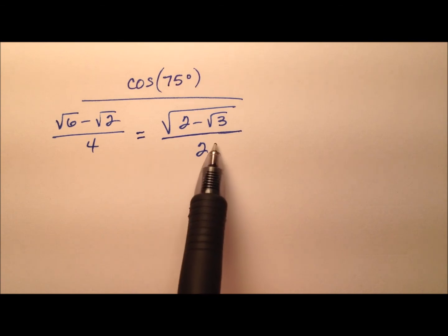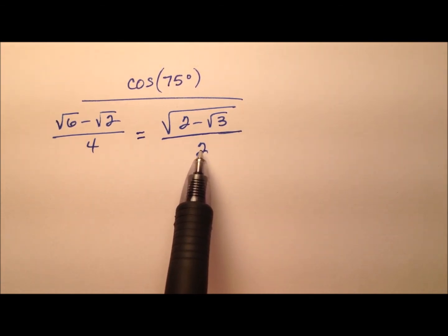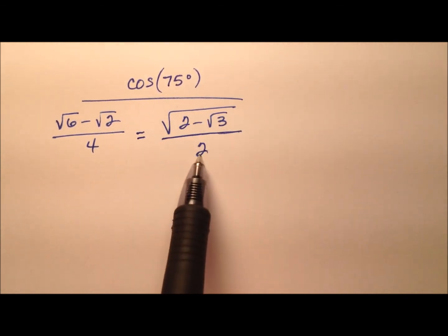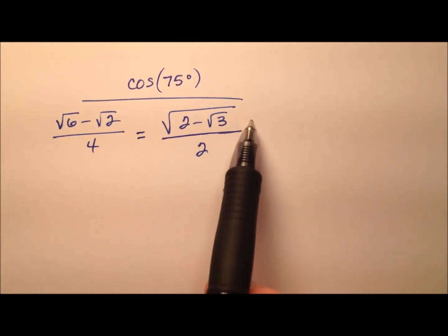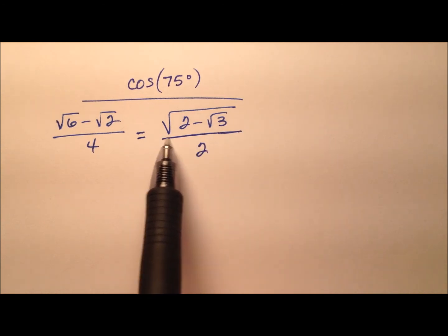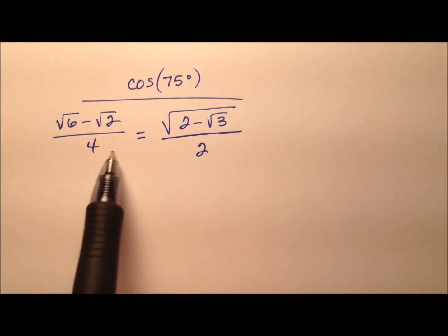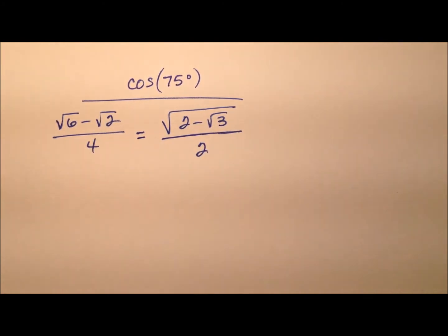Well, we're going to work through this process just like we would to verify a trigonometric identity. We're going to work one side of this equation, manipulate it, and make it look like the other side. I'm going to start by manipulating the right side using numeric manipulations, and when I'm done I'm going to have the expression that's on the left — showing that yes, indeed, they are the same.